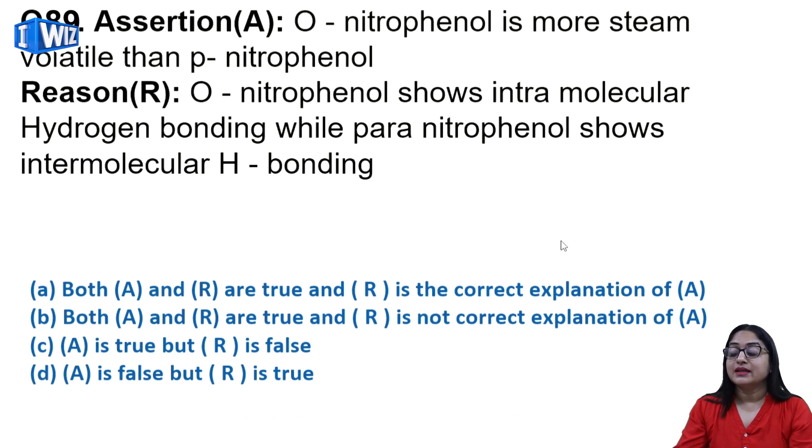Next: ortho-nitrophenol is more steam volatile than para-nitrophenol. This is true because in para-nitrophenol there is intermolecular hydrogen bonding. In ortho-nitrophenol there is intramolecular hydrogen bonding, and this is why the molecules are not associated with others and they can be more volatile. Assertion and reason both are correct and reason is the correct explanation of assertion, so A will be the option.